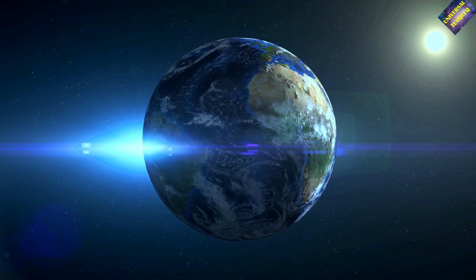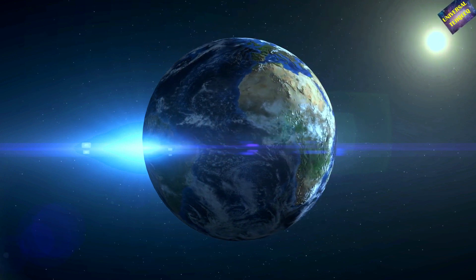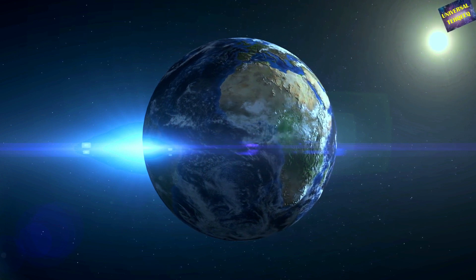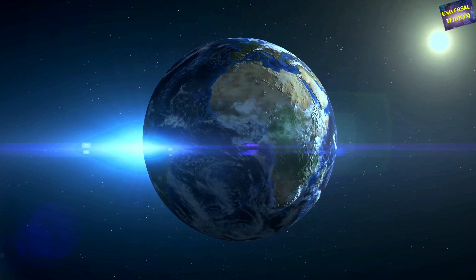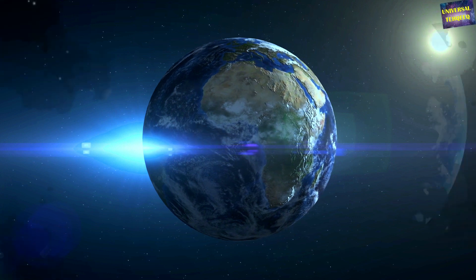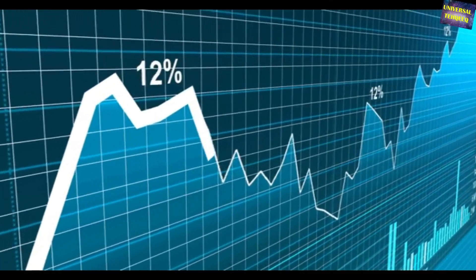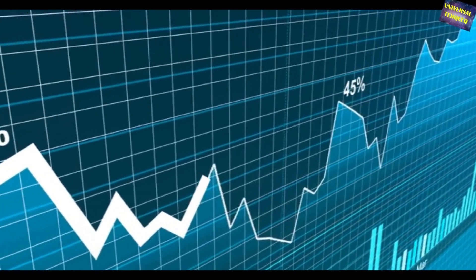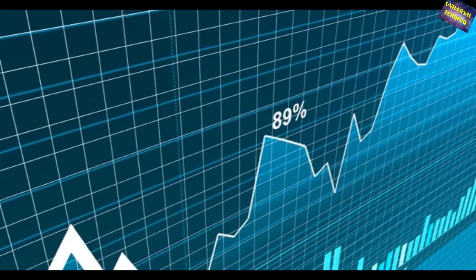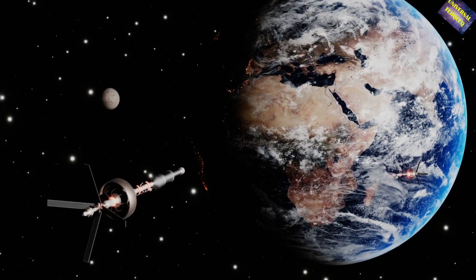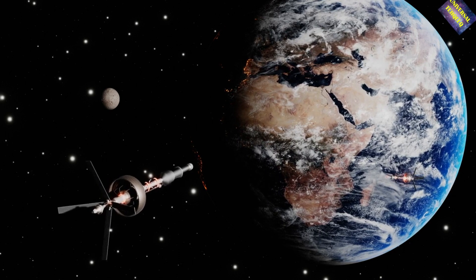Through an exploration of scientific evidence and observed effects on human health and well-being, this report will shed light on the limitations of human adaptation to Earth's atmosphere. The Earth's atmosphere is predominantly composed of nitrogen (78%), oxygen (21%), and traces of other gases such as carbon dioxide, argon, and water vapor. While this composition is crucial for supporting life, it also poses challenges for human adaptation due to the delicate balance required for optimal health and survival.